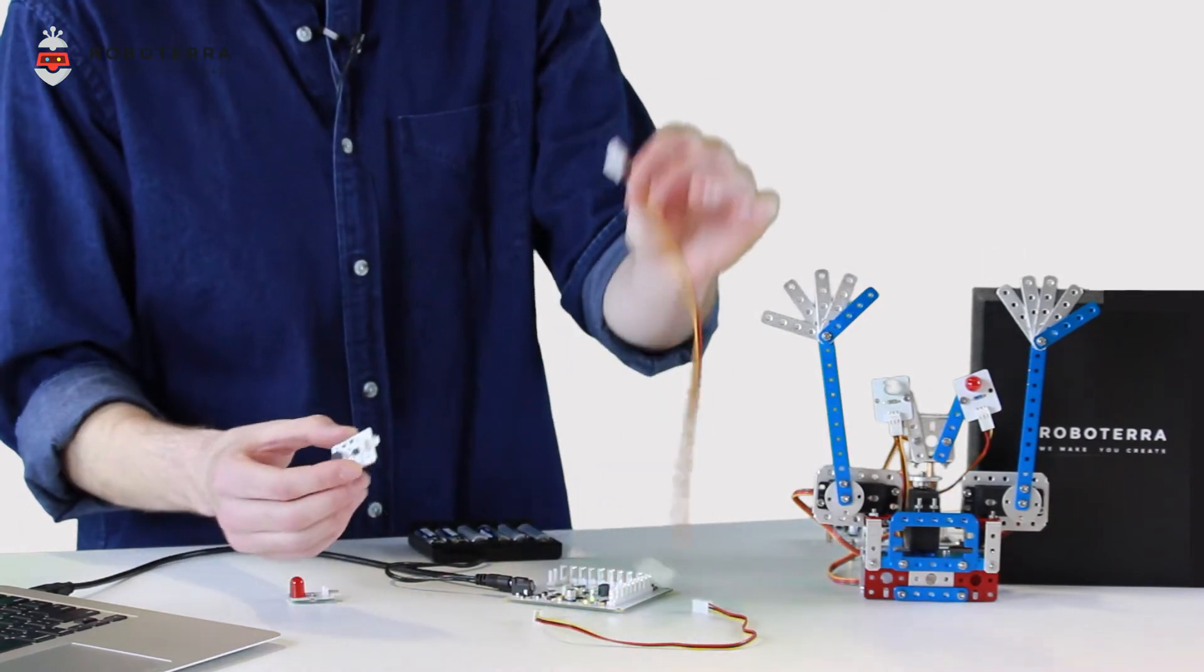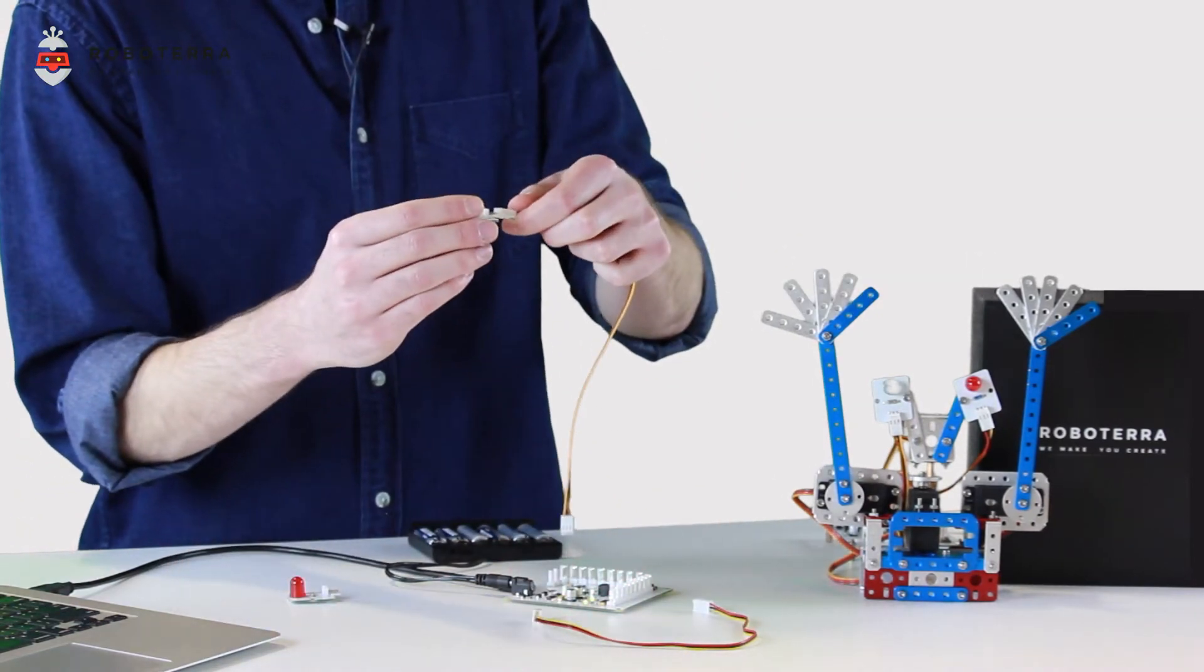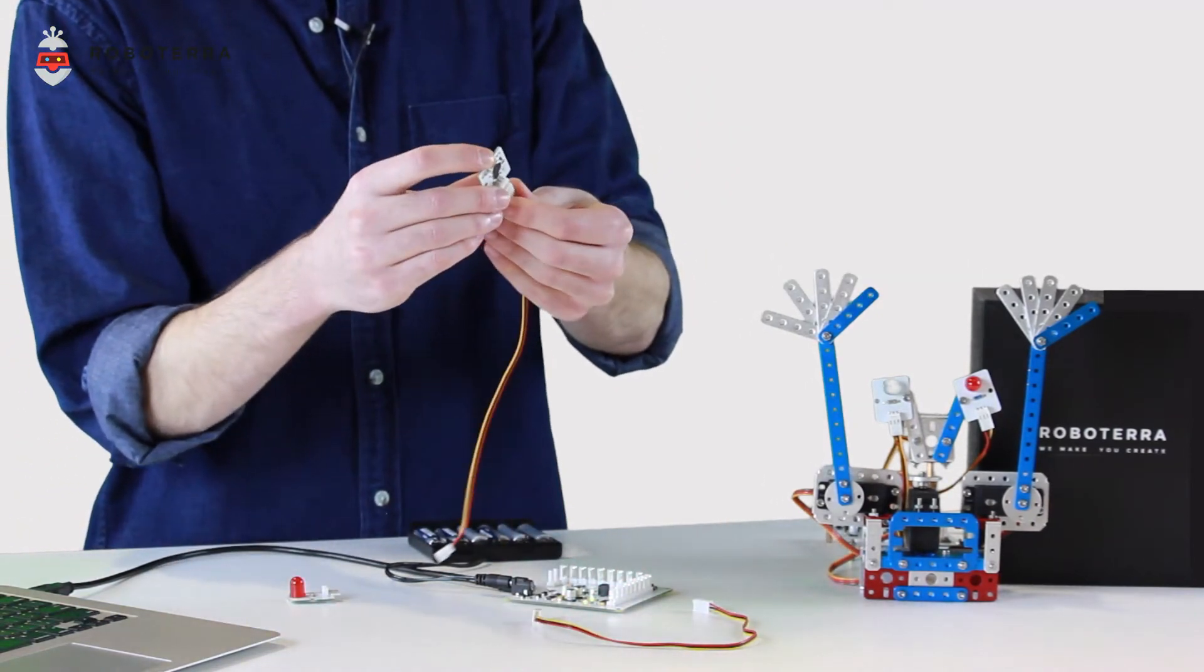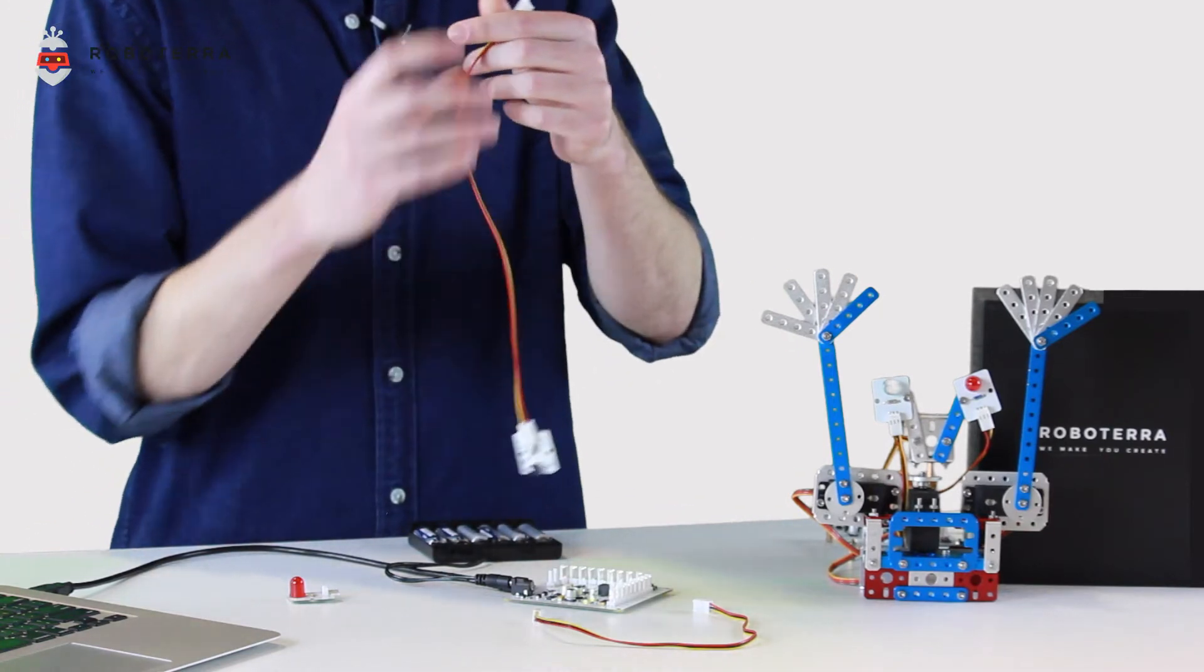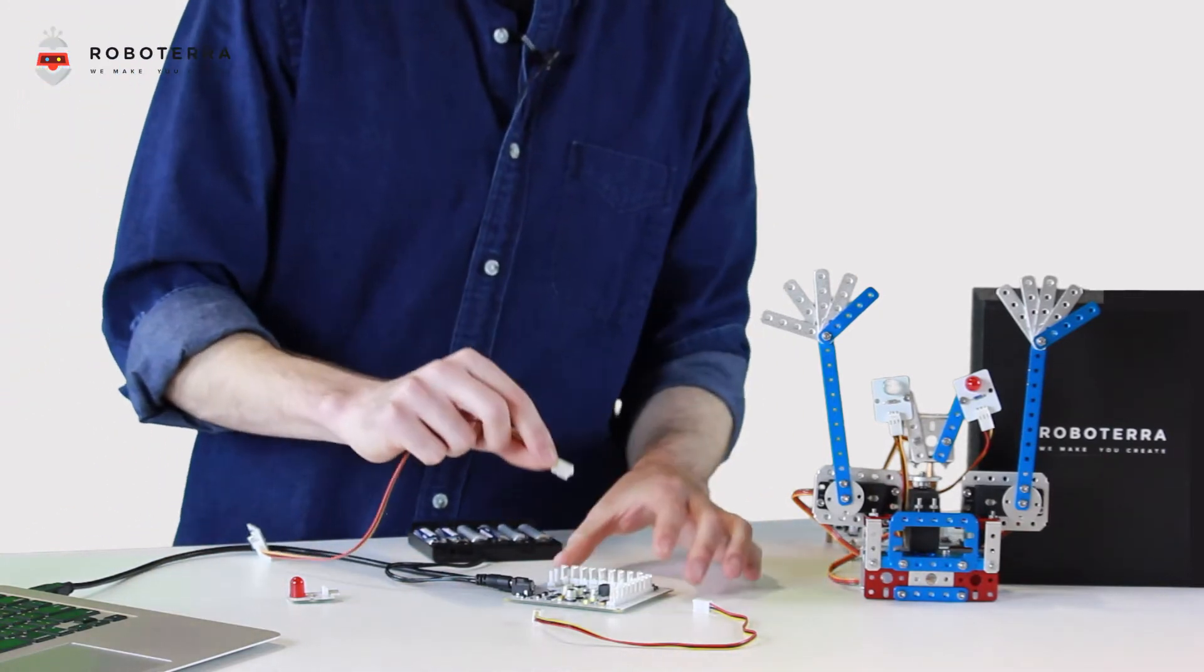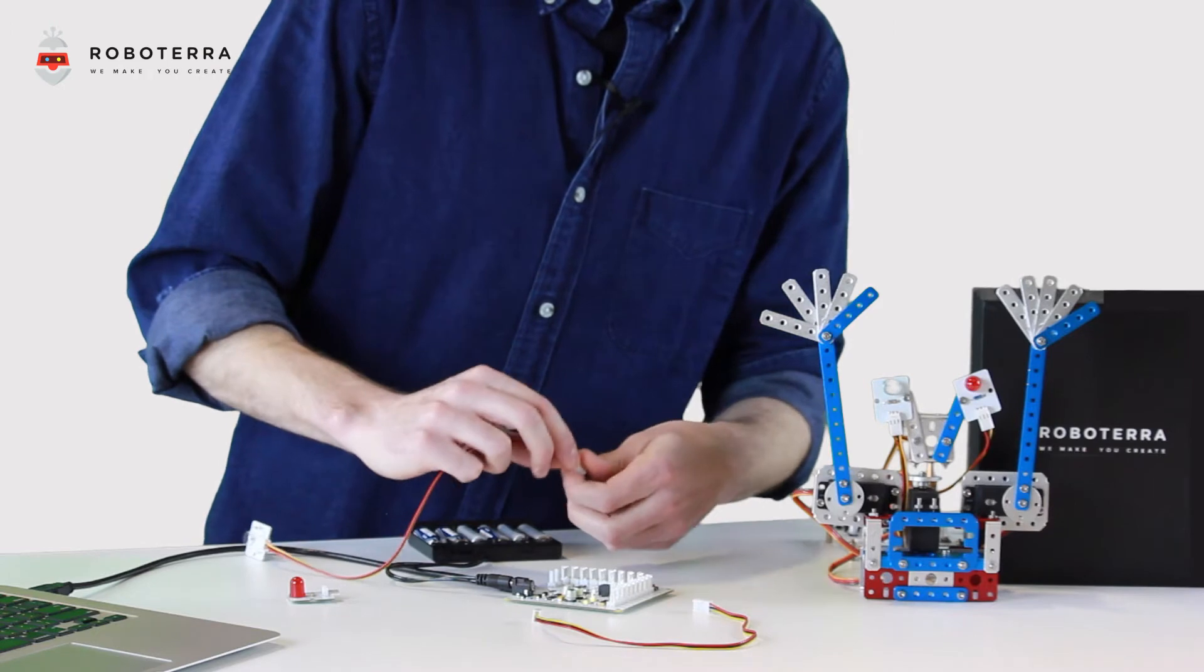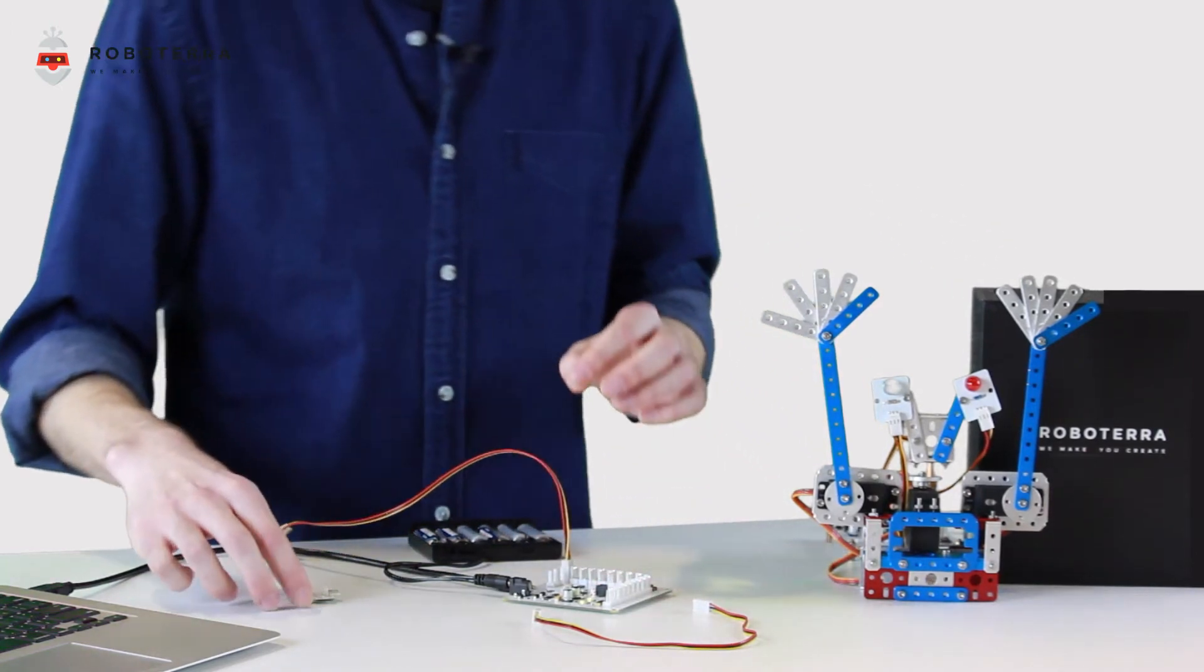First things first, get my audio sensor connected to the wire, and the other end is going to go into RoboCore, into port DIO1. Nice and easy.